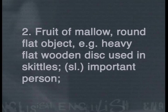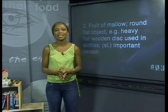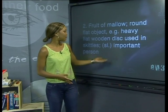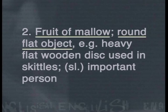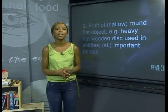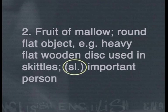The definition for cheese continues. A number two tells us we are coming to a new group of meanings, which contains three different meanings: fruit of mallow, a round flat object — for example a heavy flat wooden disc used in a game called Skittles. There is another SL in brackets: if you call someone 'the cheese' or 'the big cheese', it is slang for calling him or her an important person. Because it is slang, you wouldn't go up to your principal and say, 'Sir, you're the cheese.'